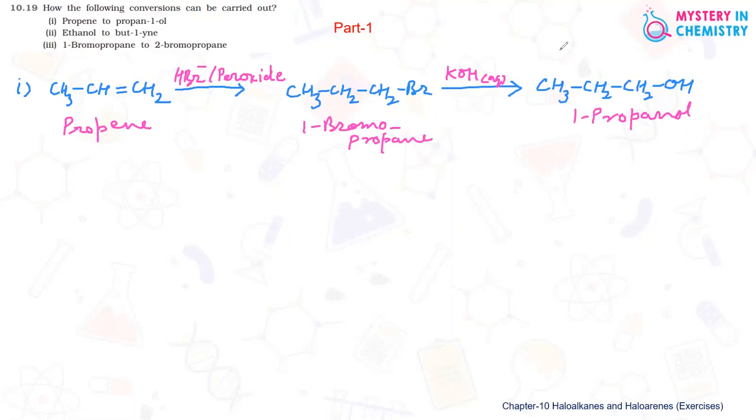Now come to the next one. Next conversion is the second one. Here, ethanol to bute-1-yne. Ethanol, so first we are writing CH3-CH2-OH is ethanol. It is converted to alkyl halide first. OH should be replaced by Cl.